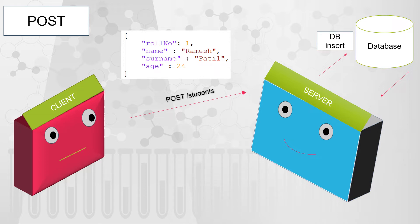For the sake of simplicity I have added a database, but in reality things are more complex. The server will create that record into the database and send back the response to the client with HTTP status code 201. 201 is used to signify that the resource has been successfully created, so the client knows the request was processed successfully.